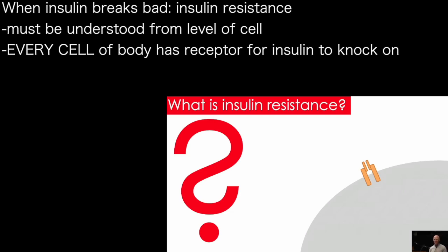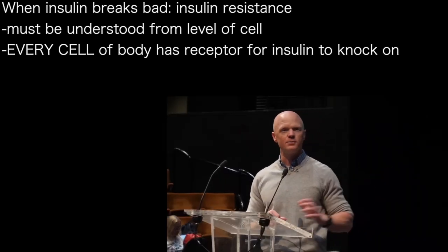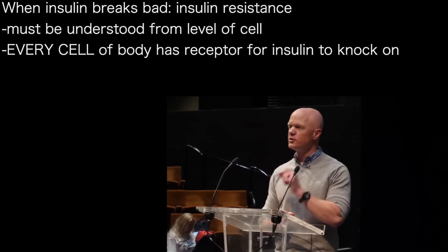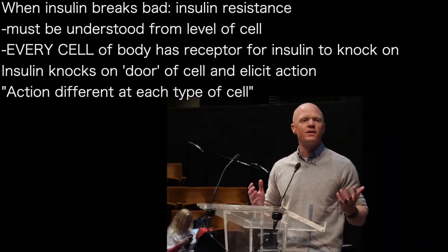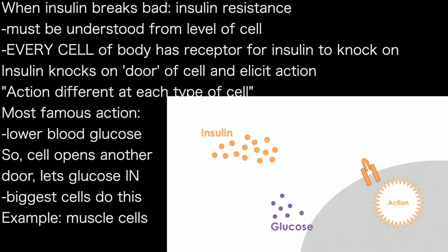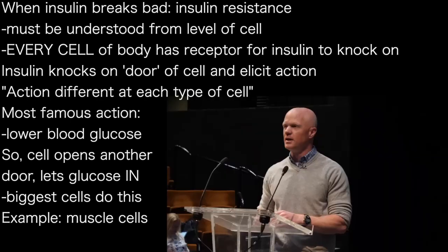Literally every cell of the body has an insulin receptor — from brain cells to bone cells, lung cells to liver cells, and all the cells in between. Insulin will come and tell the cell to do something; it will knock on the door of the cell and elicit a cellular action. What insulin does at a neuron is very different from what it does at an endothelial cell within the blood vessel. Its most famous action is to lower blood glucose, and it does so by opening another door for glucose to come in when insulin knocks. Not all of the body's cells will do that, but some of the biggest ones, like muscle cells, will.